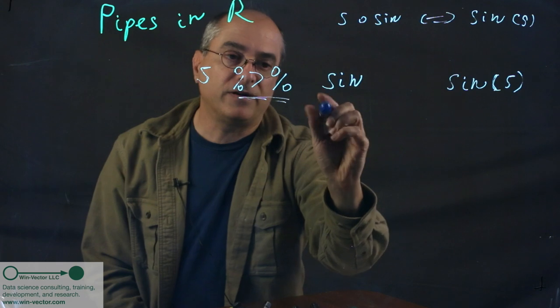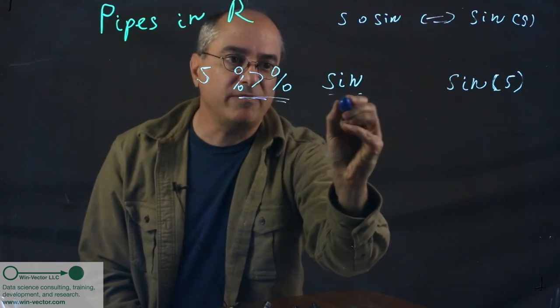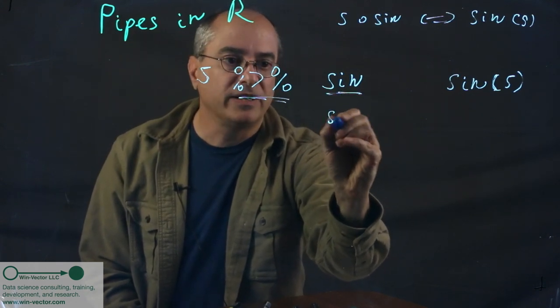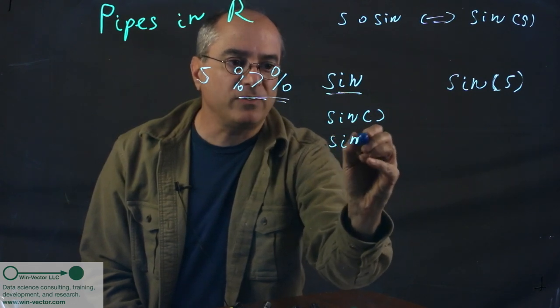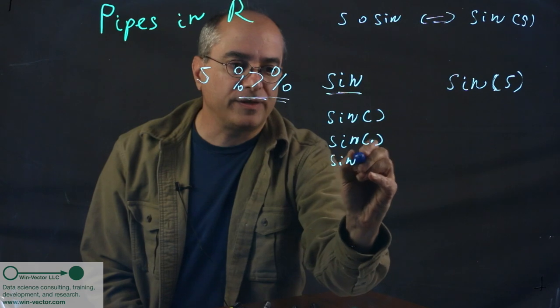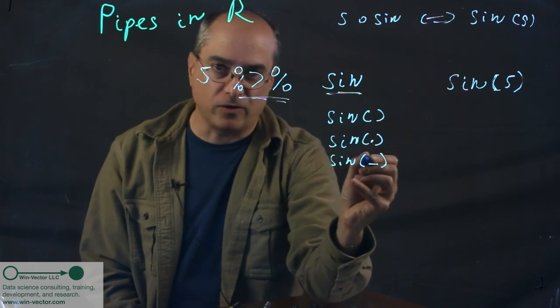How do we write the function sin? Is it written as its name, which can pull up its value? Is it written as this sort of elated form, or is it written with a placeholder, or is it written with a different, larger placeholder?